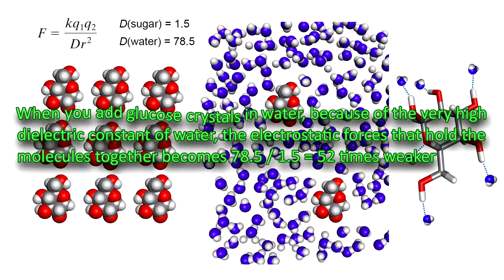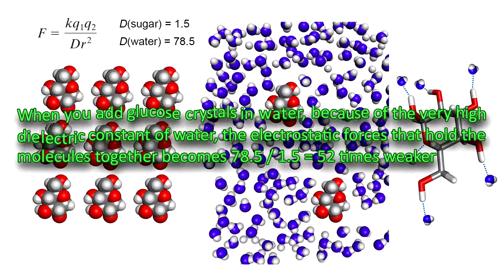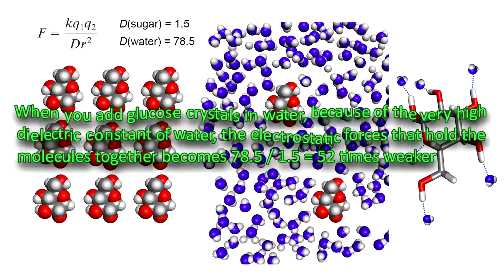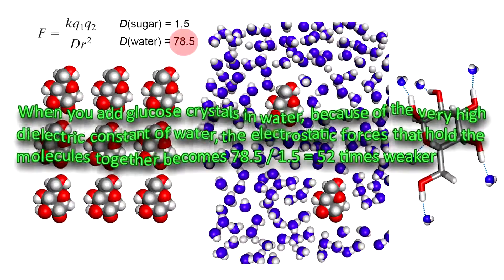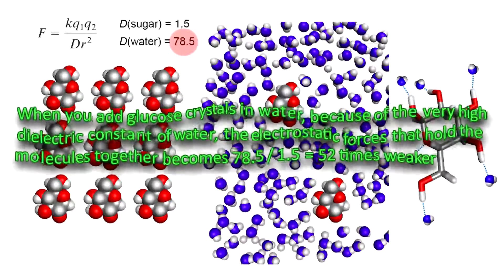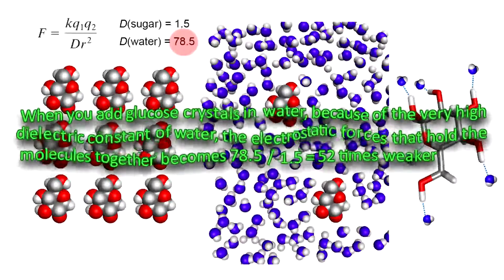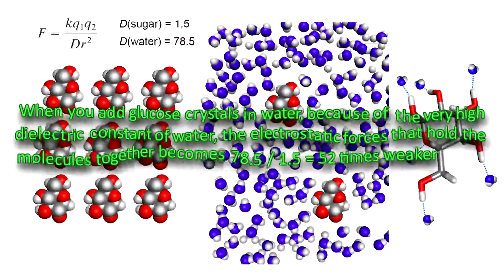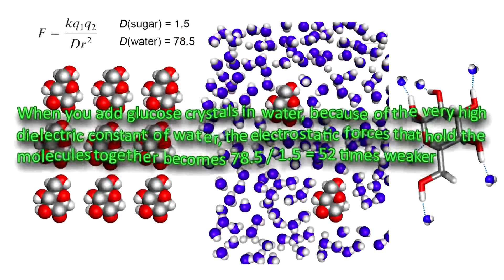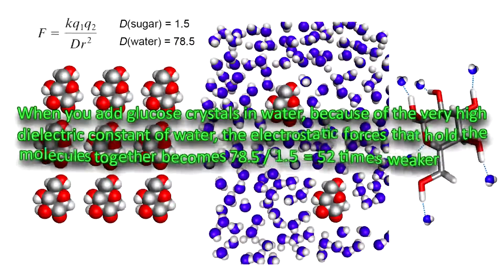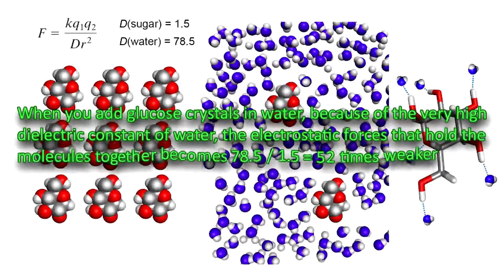You know very well that if the charges are opposite, the electrostatic potential is attractive. In such cases, you can say the dielectric constant of a solvent is a measure of its ability to keep opposite charges apart. When you add glucose crystals in water, because of the very high dielectric constant of water, the electrostatic forces that hold the molecules together become 78.5 divided by 1.5, that is 52 times weaker.